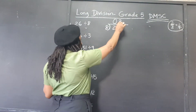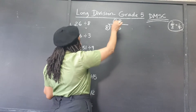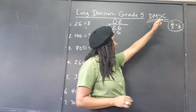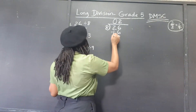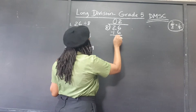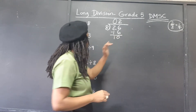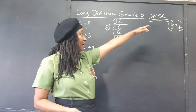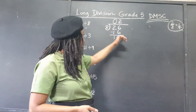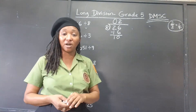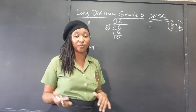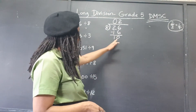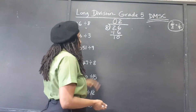Now we're going to multiply: 2 times 8 is 16. Now we're going to subtract: 26 take away 16 is 10. If we had another number here to continue the division, we would carry it down — that's what the C means. We carry it down and start the process all over again: Divide, Multiply, Subtract, Carry down.